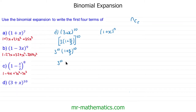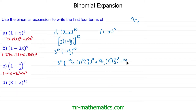So we have 3 to the 10, then: 10 choice 0 of 1 to the 10 multiplied by (x/3) to the 0; plus 10 choice 1 of 1 to the 9 multiplied by (x/3) to the 1; plus 10 choice 2 multiplied by 1 to the 8 multiplied by (x/3) squared; plus 10 choice 3 of 1 to the 7 and (x/3) cubed.